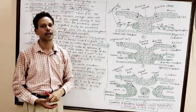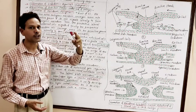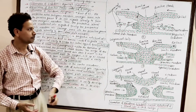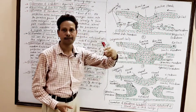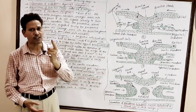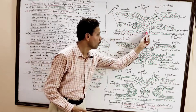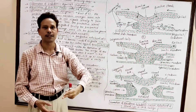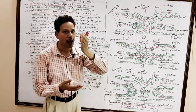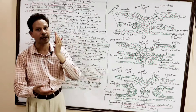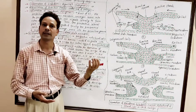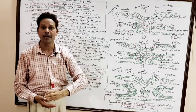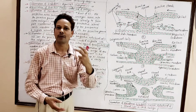Gastrulation in chick involves the following steps. Step one is the formation of endoderm or hypoblast. This layer is essential because the hypoblast is involved in the digestion of yolk — it provides nourishment to the developing embryo.